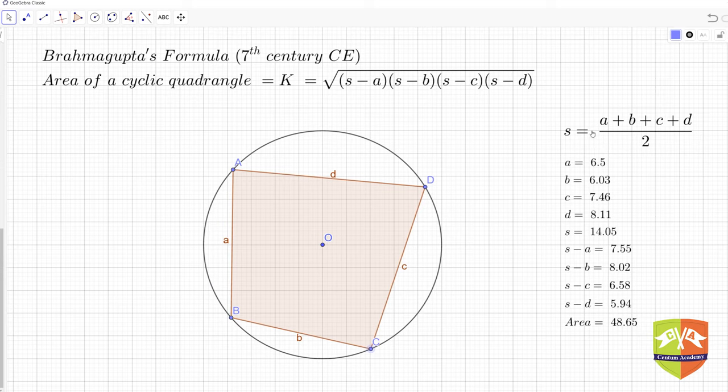If you change the locations of the points, you can see all the values are changing. As you move any of these points, the entire value keeps changing. S has been calculated, along with s minus a, s minus b, s minus c, and s minus d, and then we have found the area using the formula built into the software.